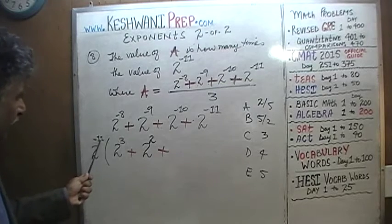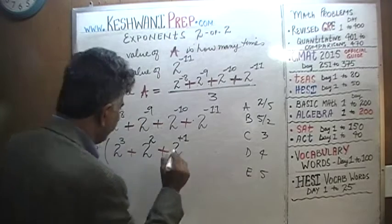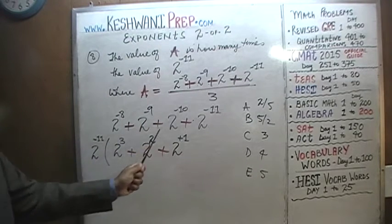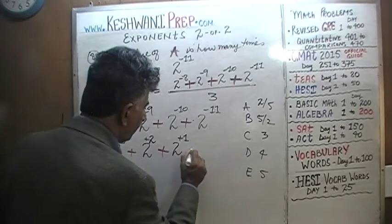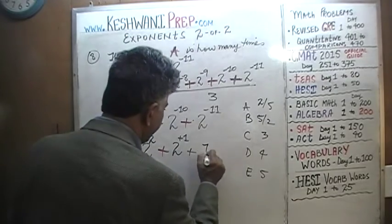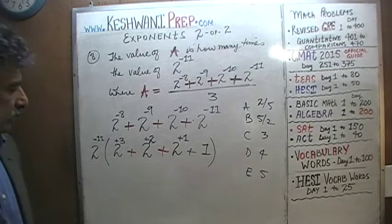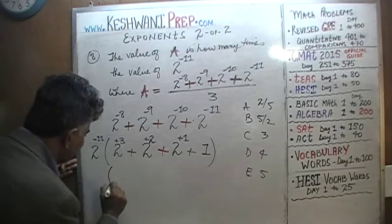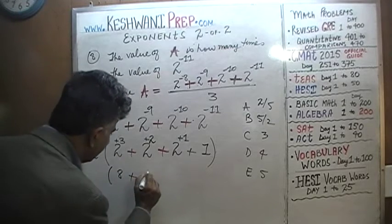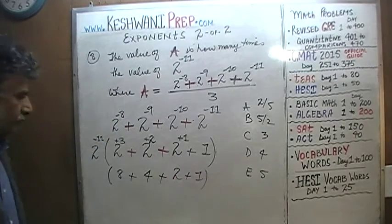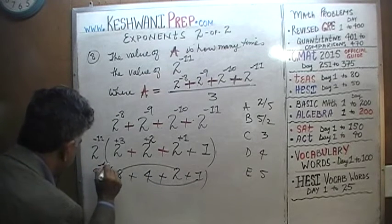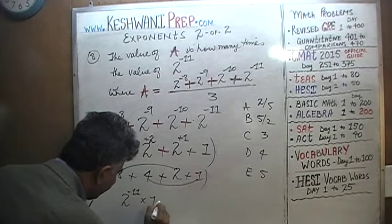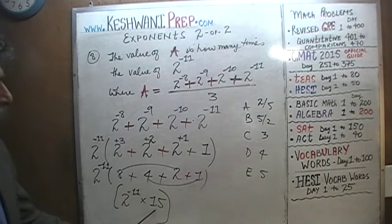So again, we have 2 raised to negative 11 as the common factor. For the term 2 raised to negative 10, we need 2 raised to positive 1, since 1 plus negative 11 equals negative 10. Positive 2 and negative 11 gives negative 9; positive 3 and negative 11 gives negative 8. And for the 2 raised to negative 11 term itself, we just have 1. So we get 2 raised to negative 11 times the quantity (8 + 4 + 2 + 1). That is 2 raised to negative 11 times 15.